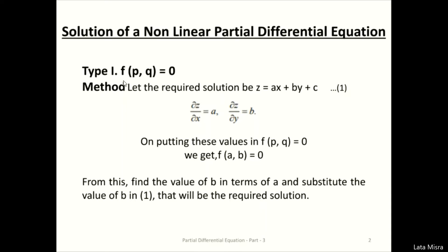For Standard Form 1, if the PDE has only p and q, we consider the solution z = ax + by + c, where a, b, c are constants and x, y, z are variables. We partially differentiate with respect to x and y to get p = a and q = b. We substitute p and q into the given PDE to get f(a, b) = 0, then find b in terms of a and substitute back into the solution equation.